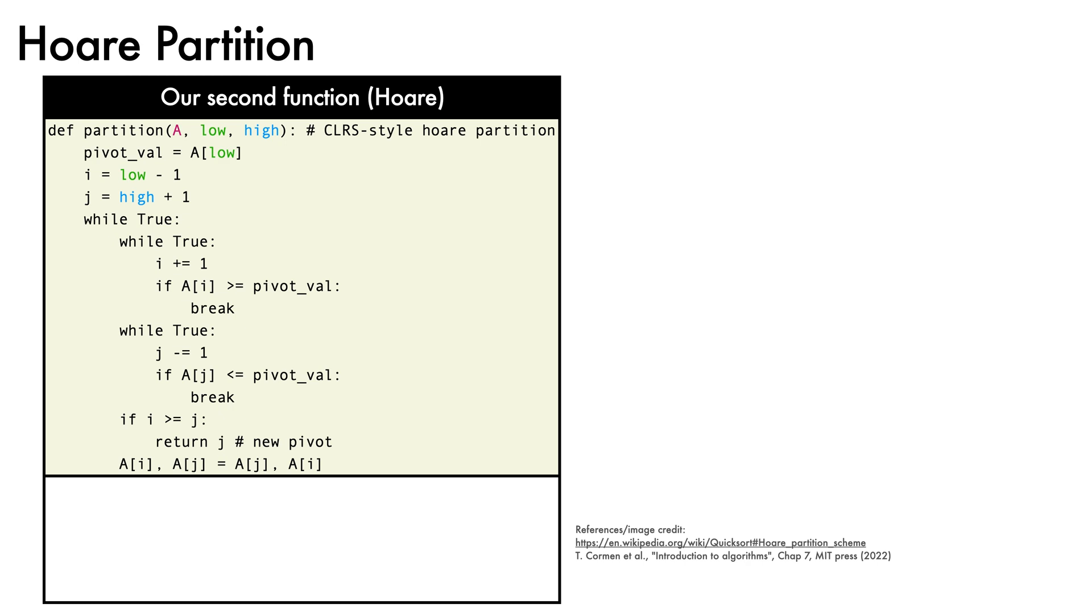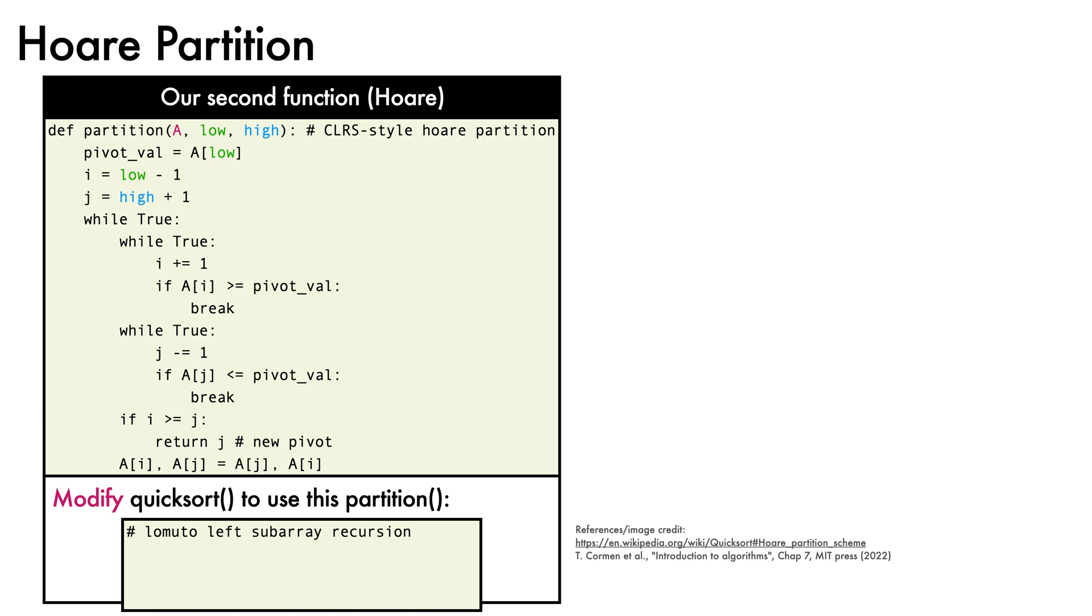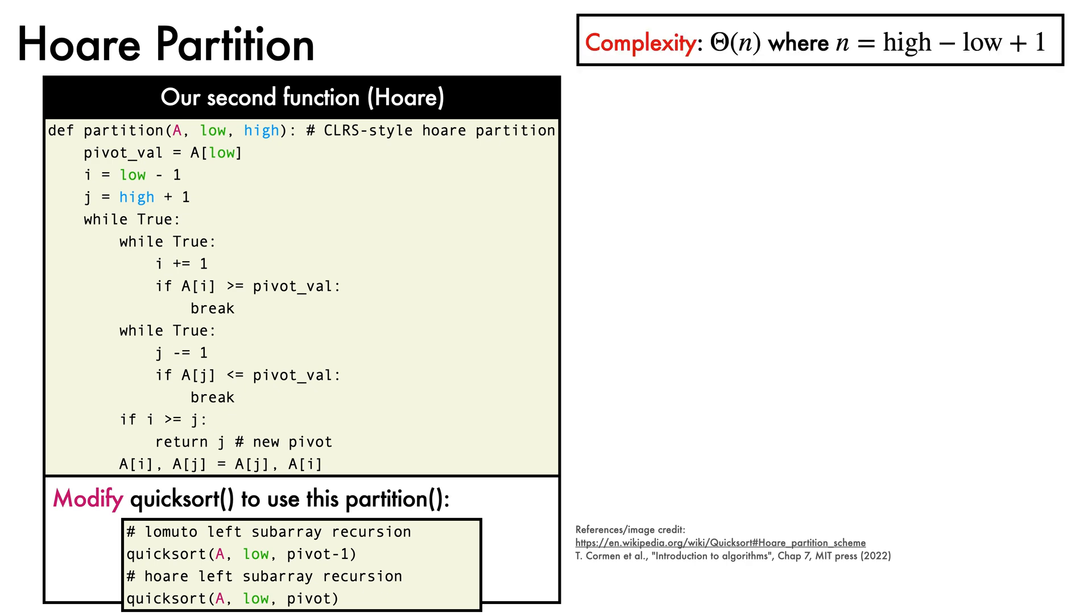To use this particular function, we also need to modify quicksort slightly. When using Lomuto partitioning, we called quicksort with arguments a, low, and pivot minus 1 to do our left subarray recursion. When using Hoare partitioning, we call quicksort with arguments a, low, and pivot to do our left subarray recursion. Both use the same right subarray recursion. The complexity of this partition function is big theta of n, which is the same as the Lomuto partition function.